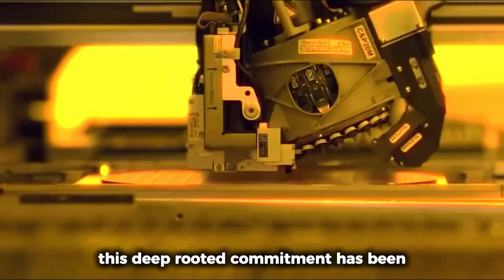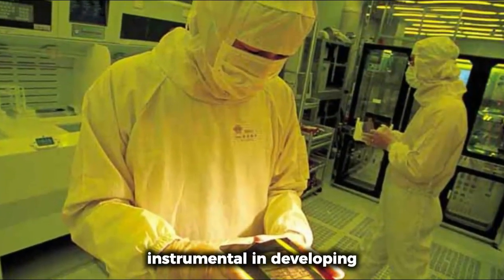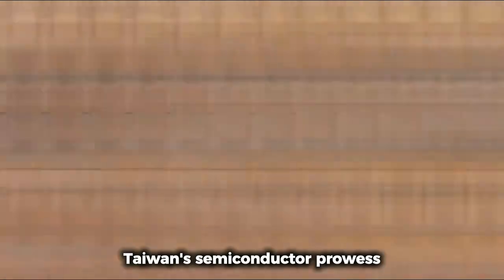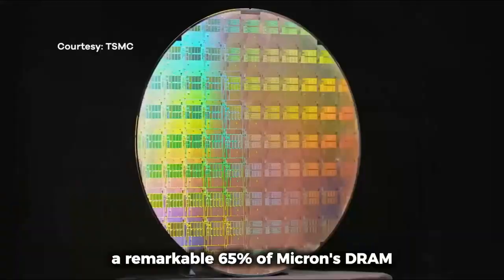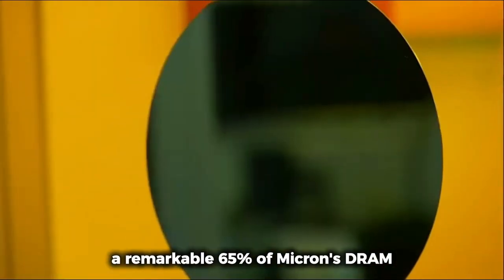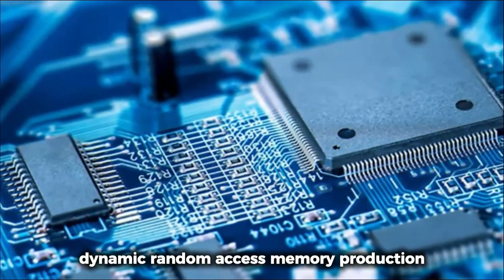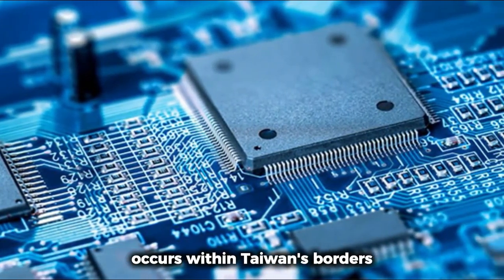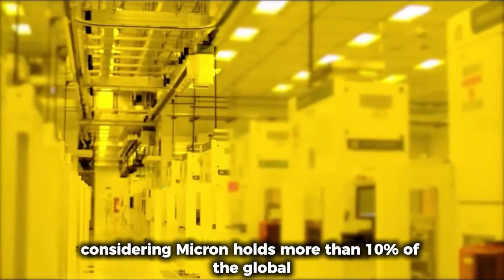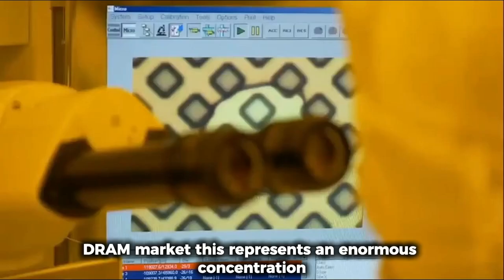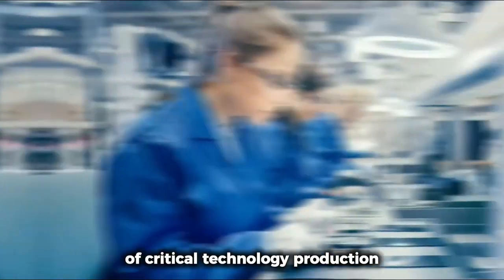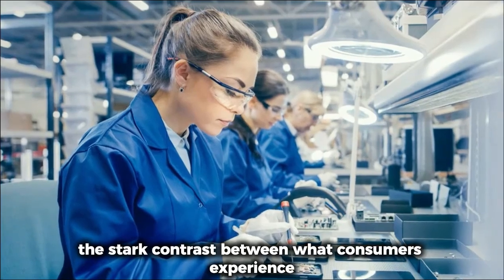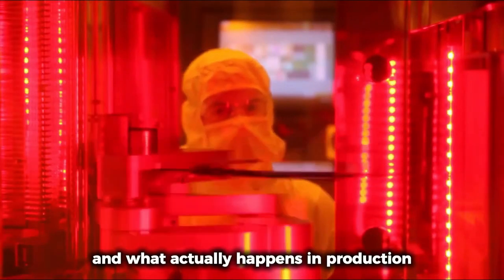Micron's presence in Taiwan spans nearly three decades, making it one of the longest established semiconductor manufacturers in the region. This deep-rooted commitment has been instrumental in developing Taiwan's semiconductor prowess. The numbers tell the story: a remarkable 65% of Micron's DRAM (dynamic random access memory) production occurs within Taiwan's borders. Considering Micron holds more than 10% of the global DRAM market, this represents an enormous concentration of critical technology production.